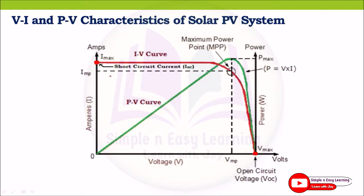Using the power values, a third axis can be used for power. The x-axis is voltage (V), the y-axis is current (A), and the third axis is power, which is the product of voltage and current. This gives the green curve, where at the open circuit voltage point the current is zero and therefore power is also zero. At the knee of the IV curve (red line), we get the maximum power output, which is called the maximum power point.